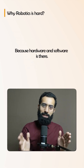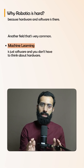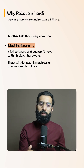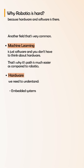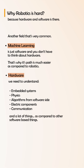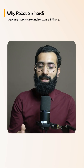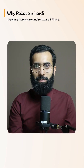Why is robotics hard? Because it involves both hardware and software. Take machine learning — it's just software, and you don't have to think about hardware, which is why its learning path is much easier compared to robotics. With hardware involved, you need to understand embedded programming, physics, algorithms on the software side, plus electrical components, communication protocols, and a lot more. You're trying to target multiple domains at once, which creates confusion — but let me give you a step-by-step procedure.